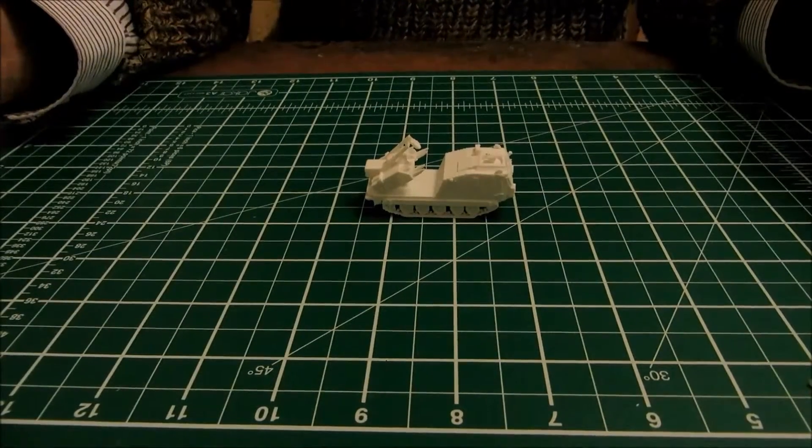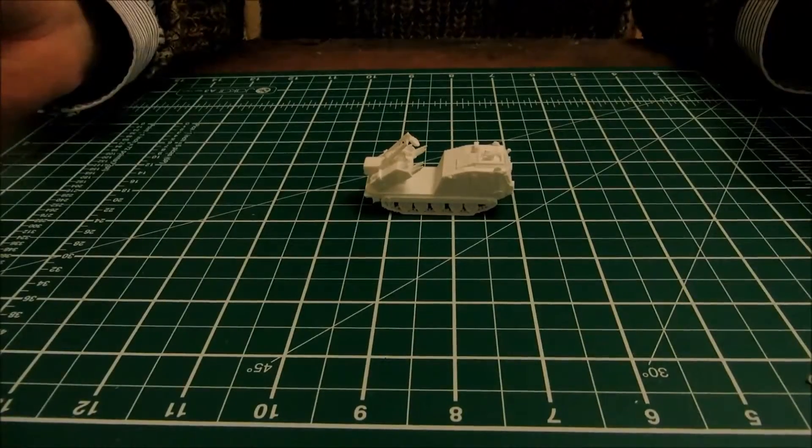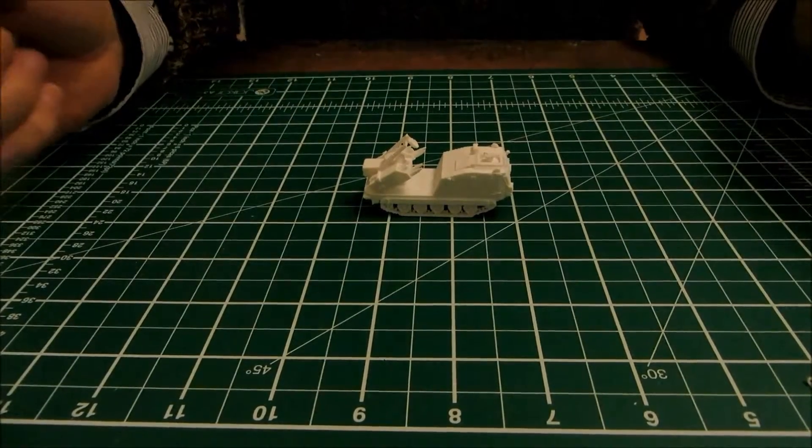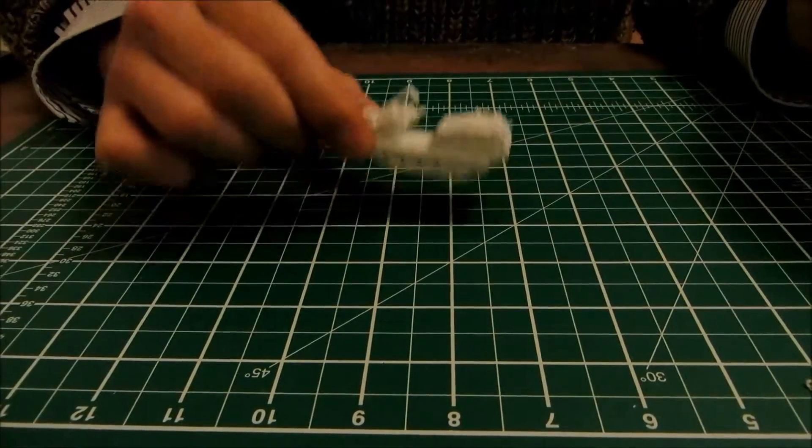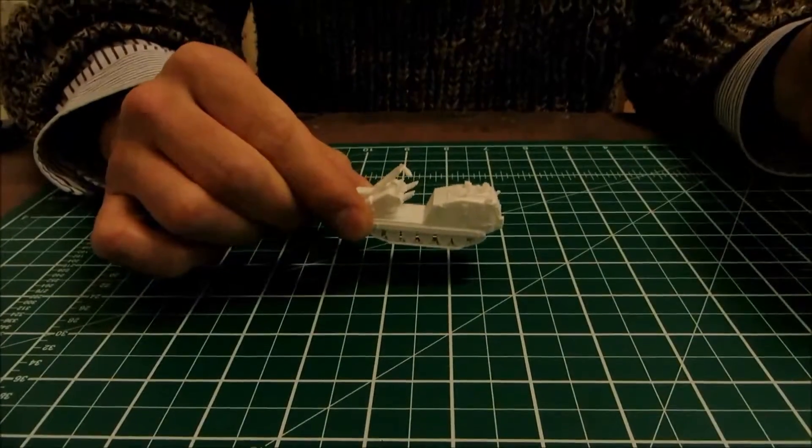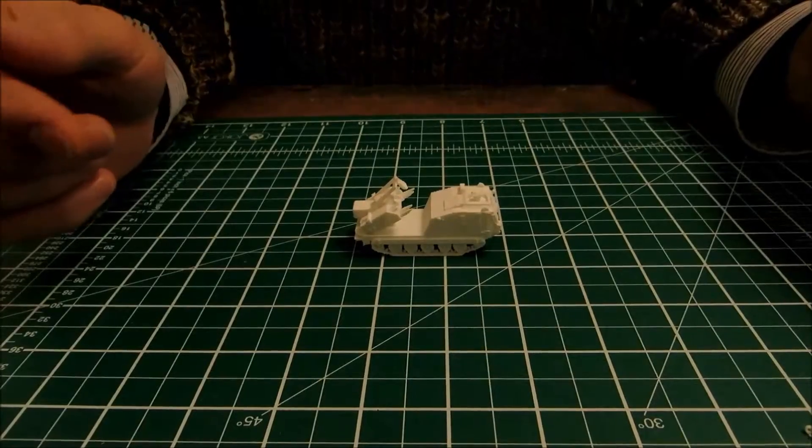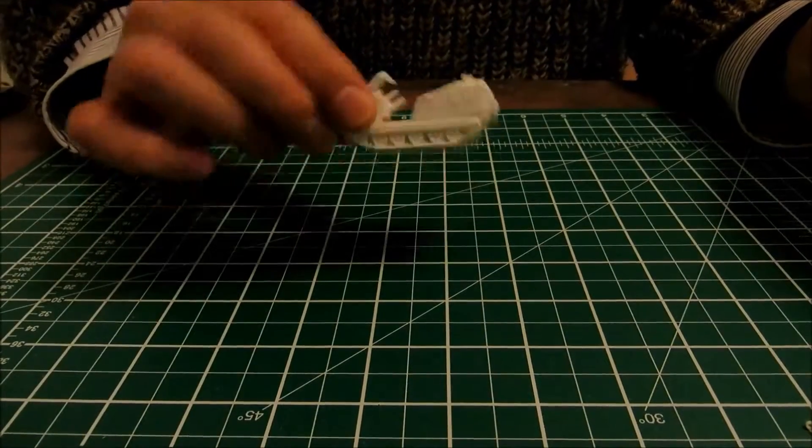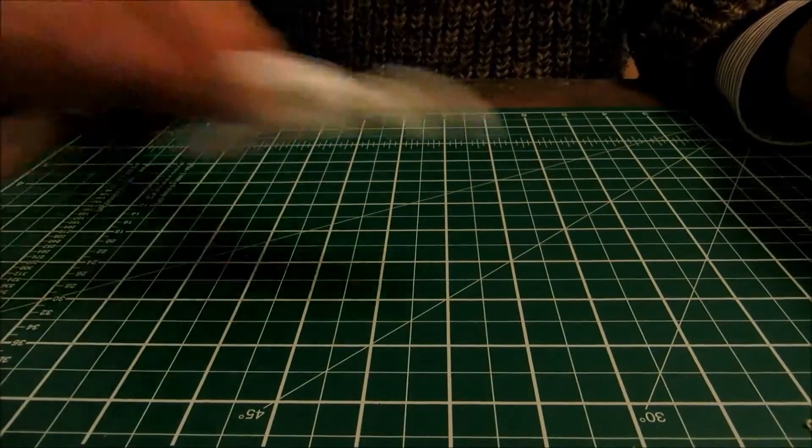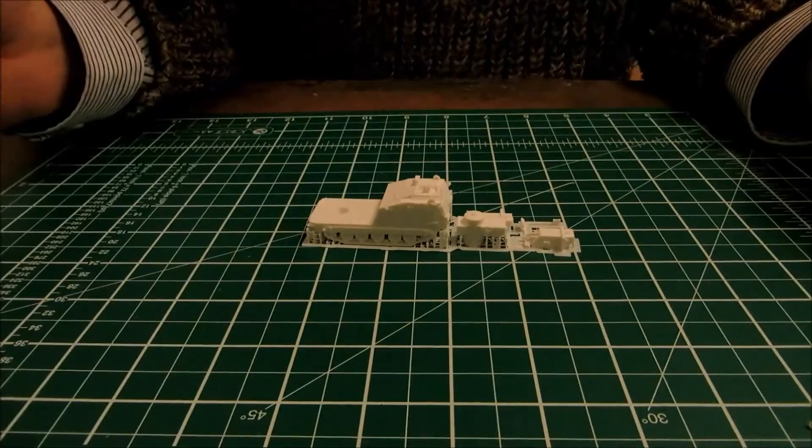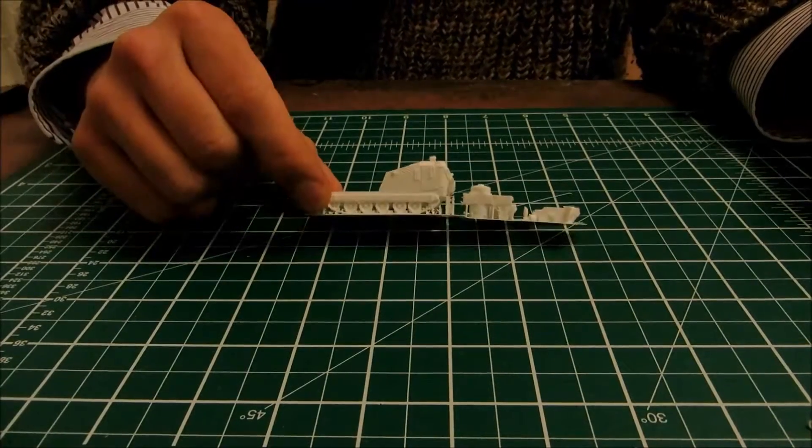Hello and welcome to the second of Butler's Printed Models YouTube videos. Today we're going to be looking at support removal and assembly of this British tracked rapier anti-aircraft system. This is the completed one. This is something more like what you're going to receive with all the support on it.